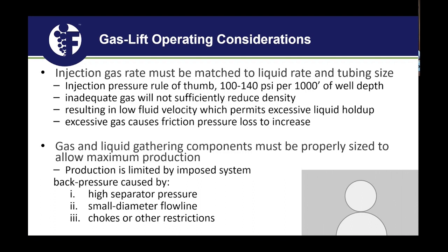Now shifting to operating considerations and design. What are our parameters to set up a gas lift system that works when you need it and works long-term to deepen the injection point and continue driving toward lower flowing bottom hole pressure? Injection pressure is the key driver of gas lift. A general rule of thumb is 100 to 140 psi per thousand feet of well depth in terms of needed compression. That falls in line with the typical 1,000 to 1,200 pounds of kickoff pressure seen in practice.